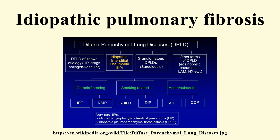The term idiopathic is used because the cause of pulmonary fibrosis is still unknown. IPF usually occurs in adult individuals between 50 and 70 years of age, particularly those with a history of cigarette smoking, and affects more men than women. The diagnosis of IPF requires exclusion of other known causes of ILDs and the presence of a typical radiological pattern identified through high-resolution computed tomography.